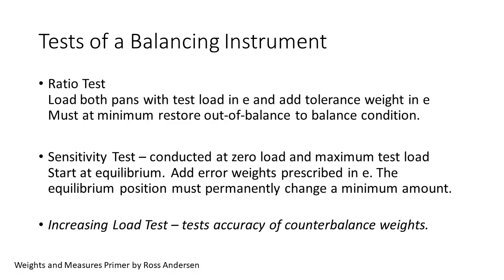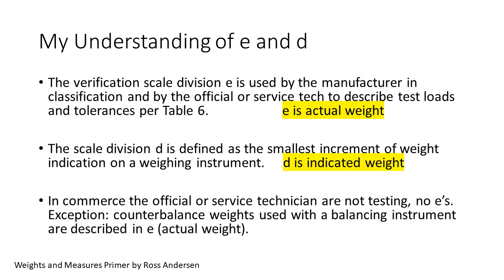The balancing instrument case study should help clarify the difference between E and D. The verification scale division or interval E is specified and used by the manufacturer to describe the accuracy class of the instrument pursuant to Table 3. Note that Table 3 is a specification directed to the manufacturer, not a tolerance directed to the official. E is used by the official or technician to describe the test loads and tolerances in Table 6. In both cases, E is actual weight and not instrument indication. The scale division D is the smallest increment of weight indication. This is just resolution and it is not connected to the accuracy in E.